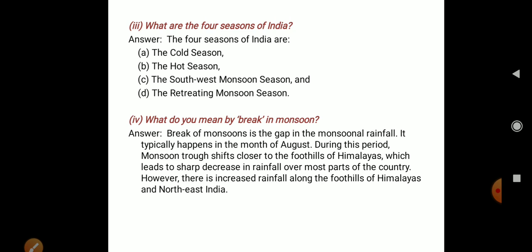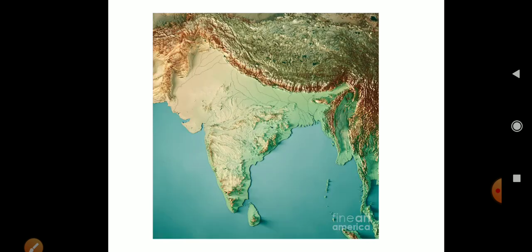It typically happens in the months of August. During this period, the monsoon trough and low pressure shifts closer to the foothills of the Himalayas, which leads to a sharp decrease in rainfall over most parts of the country. However, there is increased rainfall along the foothills of the Himalayas and northeast India.